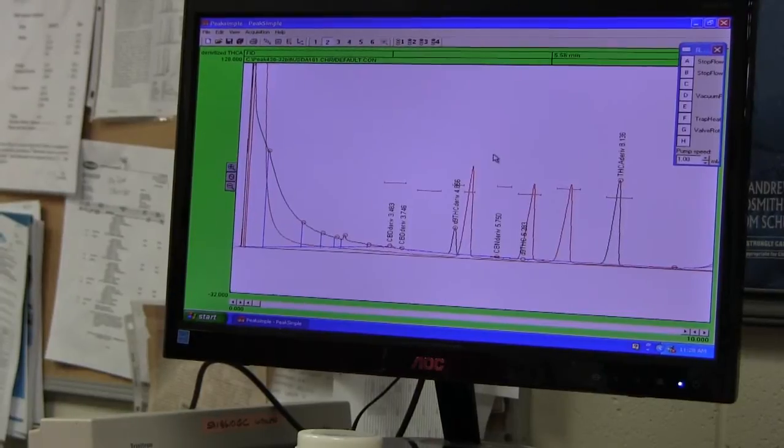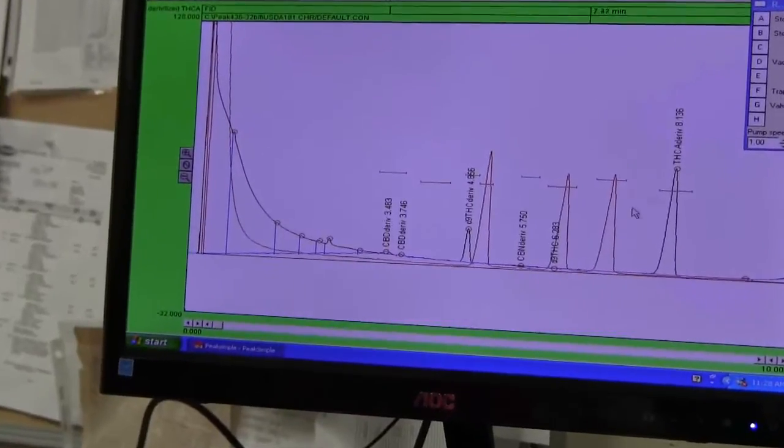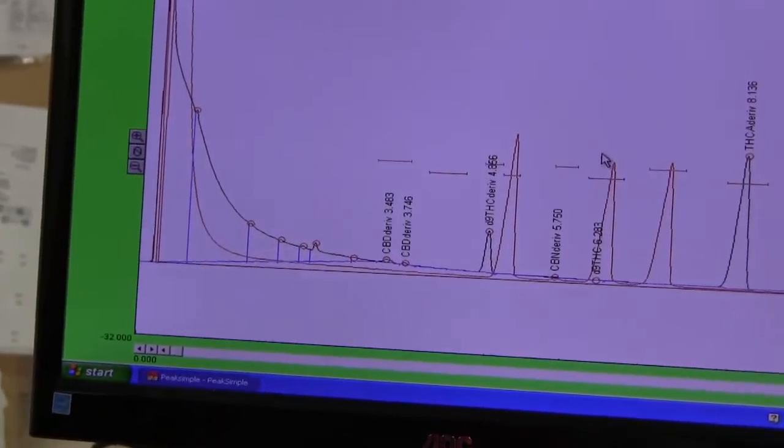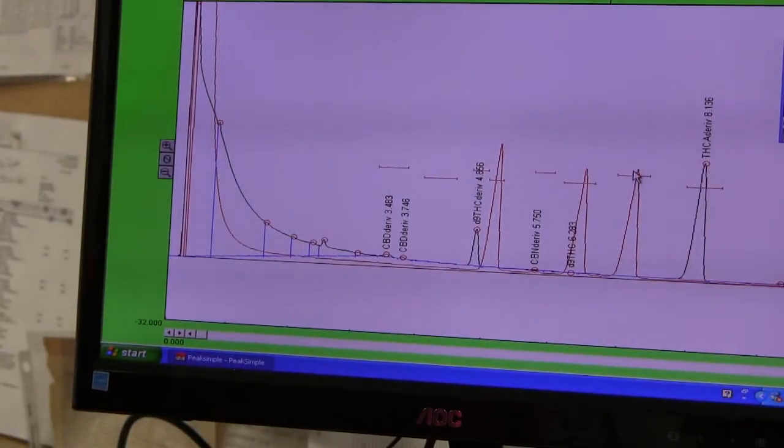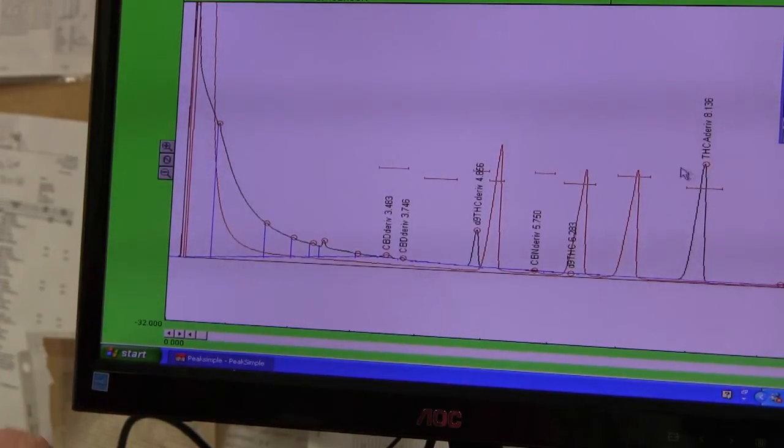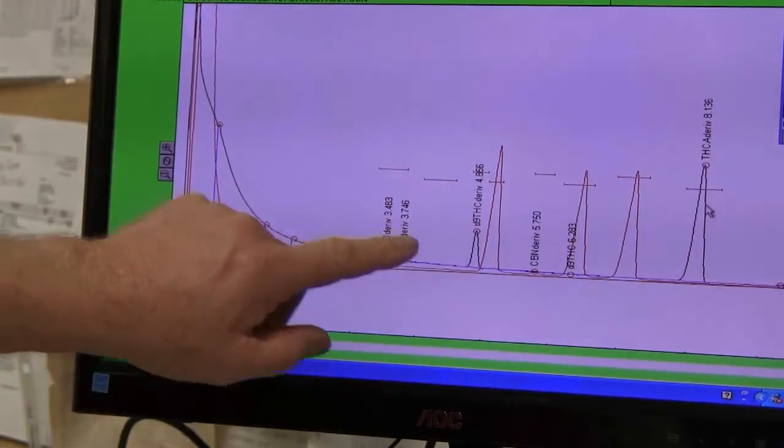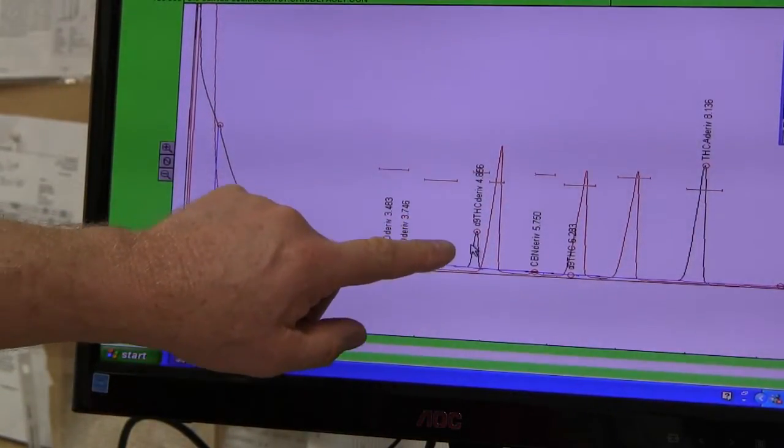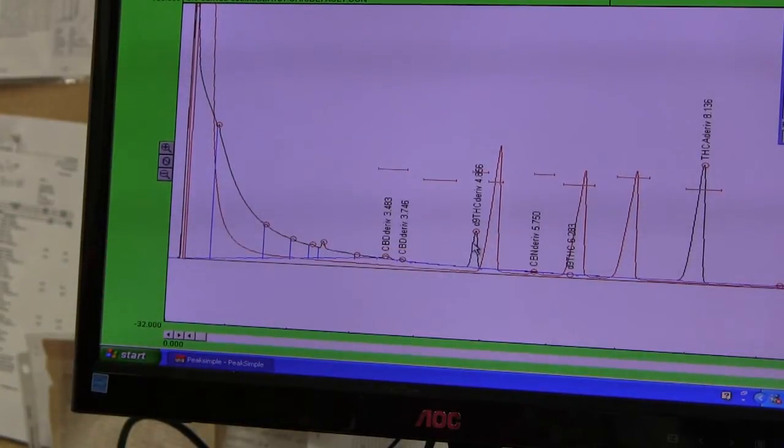So now we inject the derivatized THCA peak. And notice now that instead of coming out at the time of decarboxylated delta-9, the THCA peak comes out well after the CBN peak. There's a separate peak at the end of the chromatogram. This particular THCA standard has apparently decarboxylated somewhat in storage because along with the THCA peak, the derivatized THCA peak, we also see a smaller peak that comes out at the time for derivatized delta-9 THC.